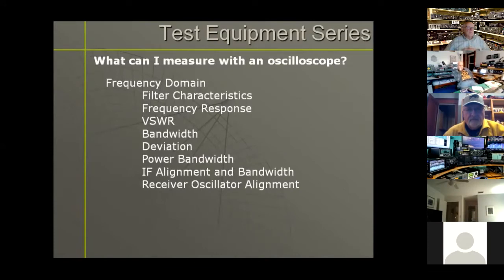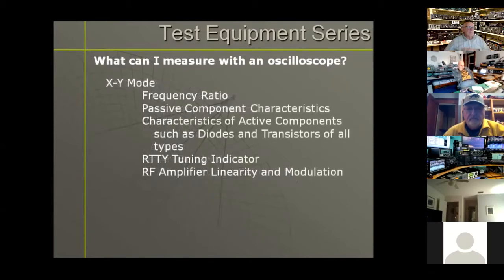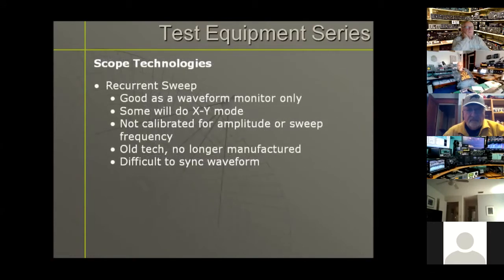What can you measure with an oscilloscope in the frequency domain? Filter characteristics, response curves, SWR, bandwidth, deviation, power bandwidth, IF alignment, receiver and oscillator alignment. We can also use a scope in XY mode, which gives us the ability to measure frequency, passive component characteristics, characteristics of active components like diodes and transistors. You can also use it as a ready tuning indicator in your shack and measure RF amplifier linearity and modulation.